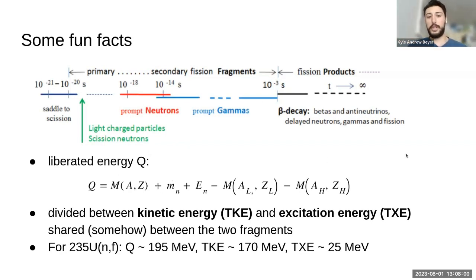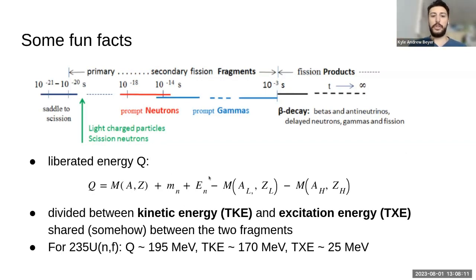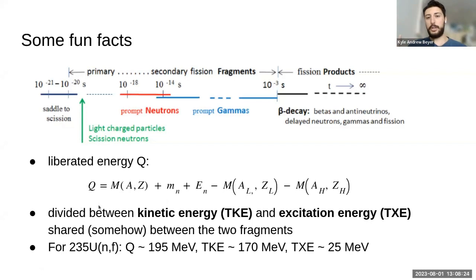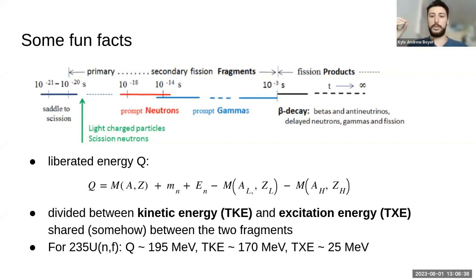The energy that you release in fission is just a function of what was the mass of the initial nucleus, what were the masses of the two final fragments, and if fission is induced by a neutron, you also have that incident neutron energy and mass of the neutron added to the initial energy budget of the system. This liberated energy is divided between kinetic energy of the two fragments — what we call TKE, the total kinetic energy — so they're zipping off at high speeds after scission occurs.